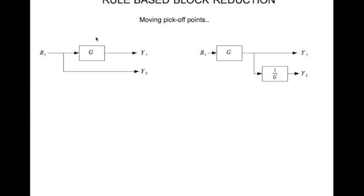So if you move a pick off point to the front of a block then that signal should be multiplied by 1 divided by the transfer function.